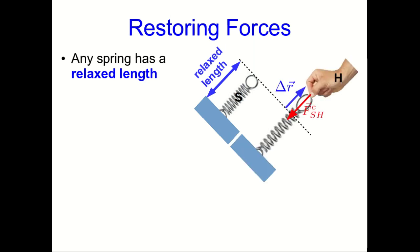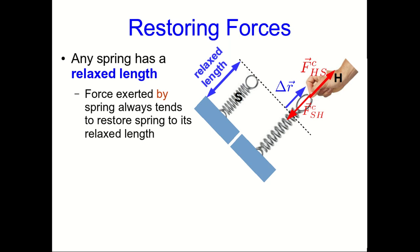If you pull on the spring, then it stretches and you can feel it pulling back on your hand. Notice that the force I've put on that diagram is the force that the spring is exerting on your hand. That, of course, is part of an interaction pair with the force that your hand is exerting on the spring. Notice that that force by the spring on your hand is pulling back towards where the end of the spring would be if it was at its relaxed length.